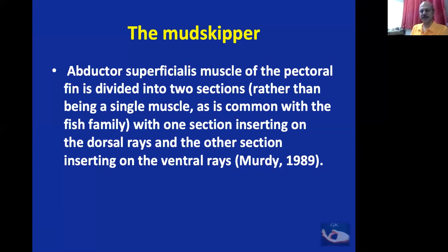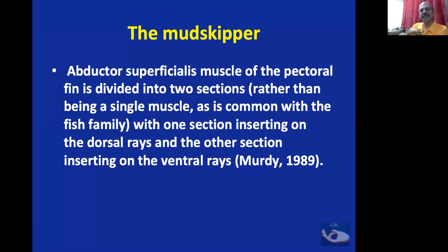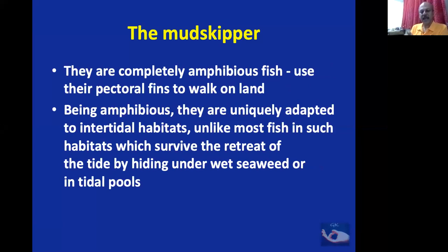This mudskipper has an abductor superficialis muscle of the pectoral fin divided into two sections. Usually it is a single muscle, but these specialized fish that use it for walking have got two attachments — one to the dorsal side and one to the ventral side — making both movements powerful. They can flex it and also extend it, giving them the power to walk using these fins. One section inserts on the dorsal ray and the other on the ventral rays. They are completely amphibious and use their pectoral fins to walk on land.